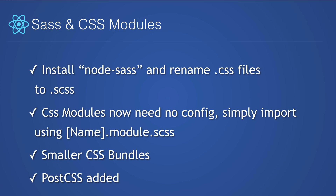Version 1 of Create React App had SASS integration, but there was some additional configuration that needed to be done. With version 2, you can simply install Node SASS and rename your .css files to .scss and go to town — it makes working with SASS a little bit easier. CSS modules allow you to use the same CSS classes across different files without having to worry about conflicts. CSS modules work right out of the box with Create React App 2. You can just import your module using the syntax — your module name dot module dot either .scss or .css.